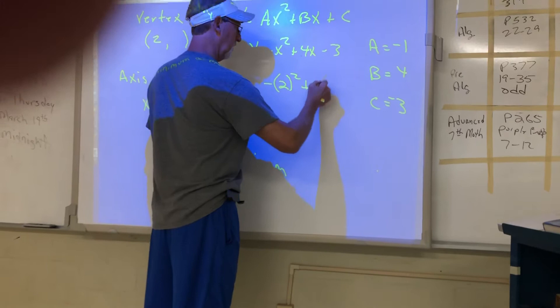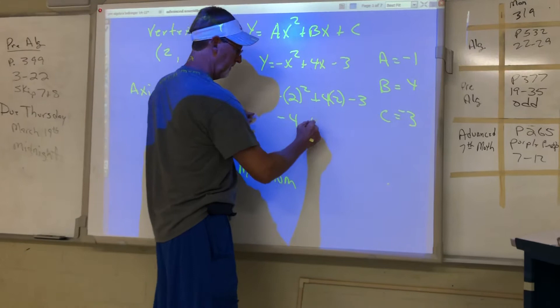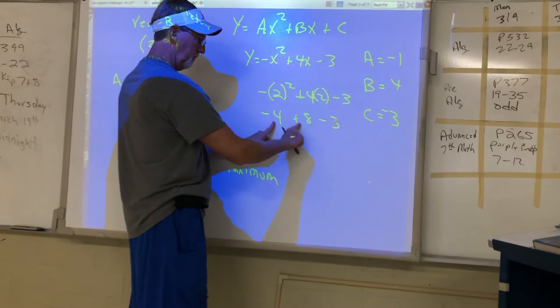Here we have to square the 2 first and get 4. Once we do that, then we take the opposite of what we get. And then plus 4 times 2 is 8, then minus 3. These give us negative 7, plus 8 is 1.